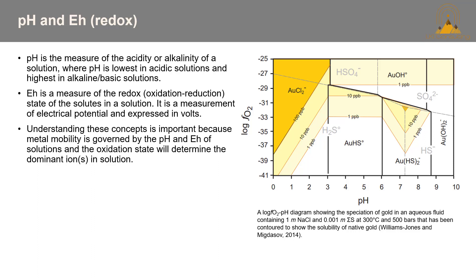The diagram at the right shows a system at 300°C and 500 bar. It illustrates fields of stability where gold can be transported as specific complexes — for example, AuCl₂⁻ at a pH less than 3 over a range of oxidation states, whereas Au(HS)₂⁻ between a pH of approximately 6 to 8.5 in more reducing conditions. Superimposed on this diagram are contours for solubility of gold and the conditions needed for it to precipitate from solution and in what quantities.